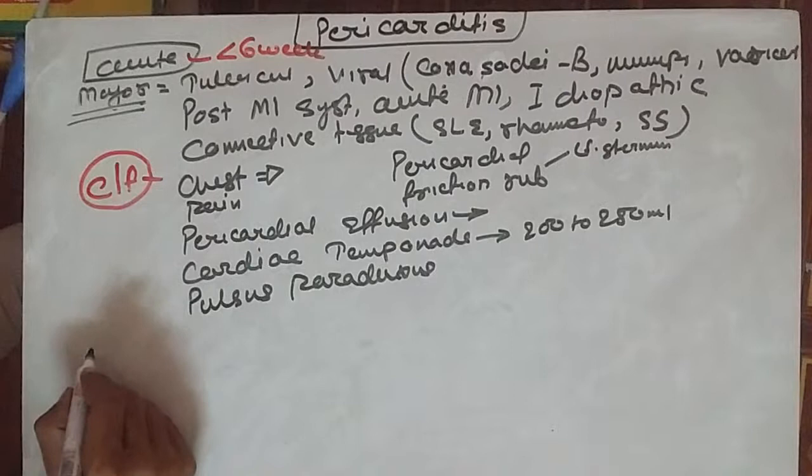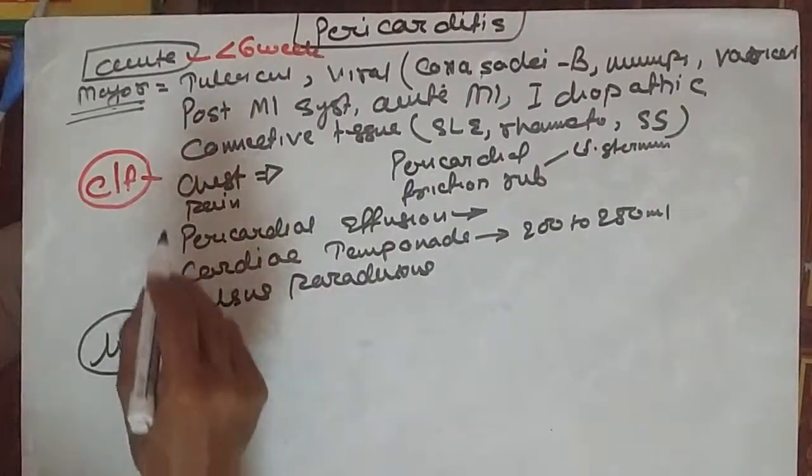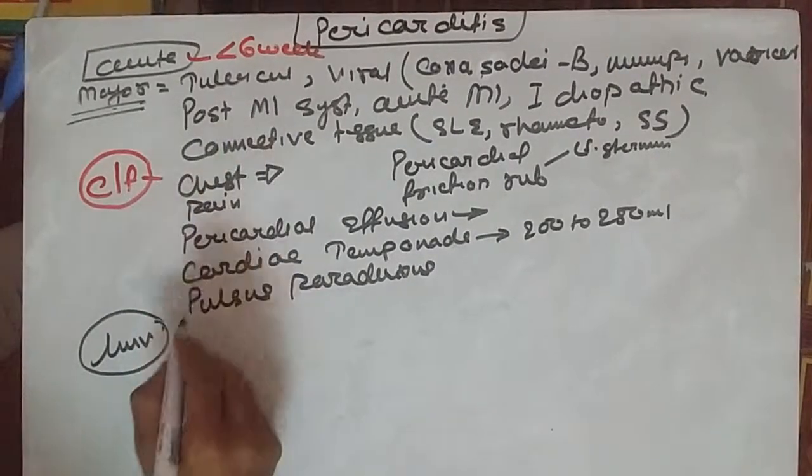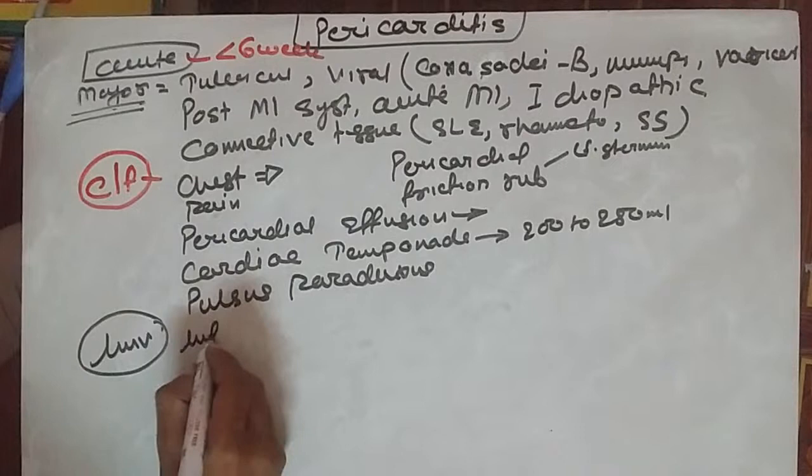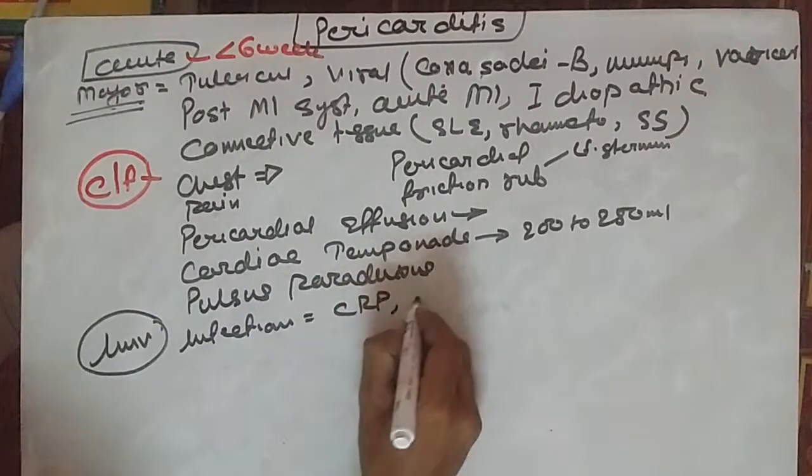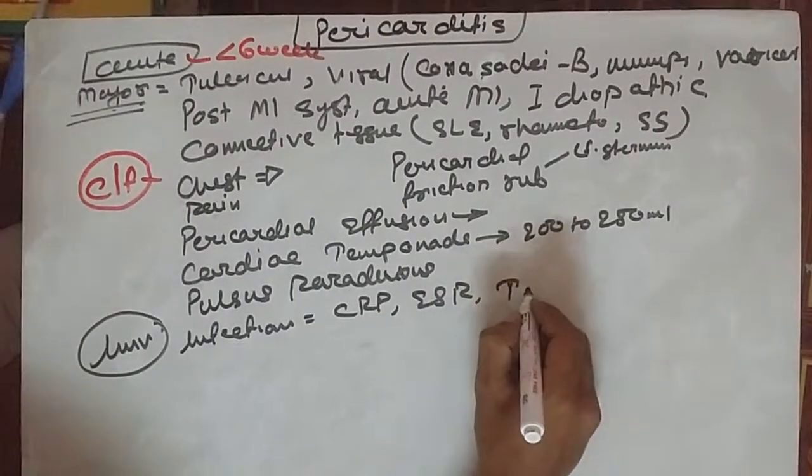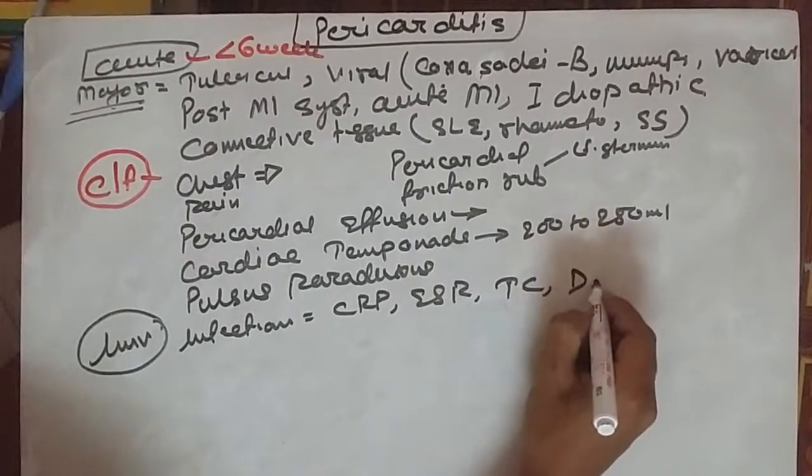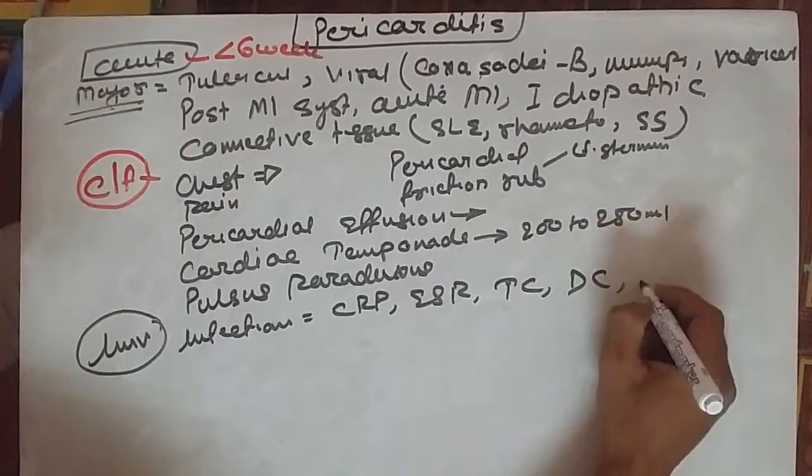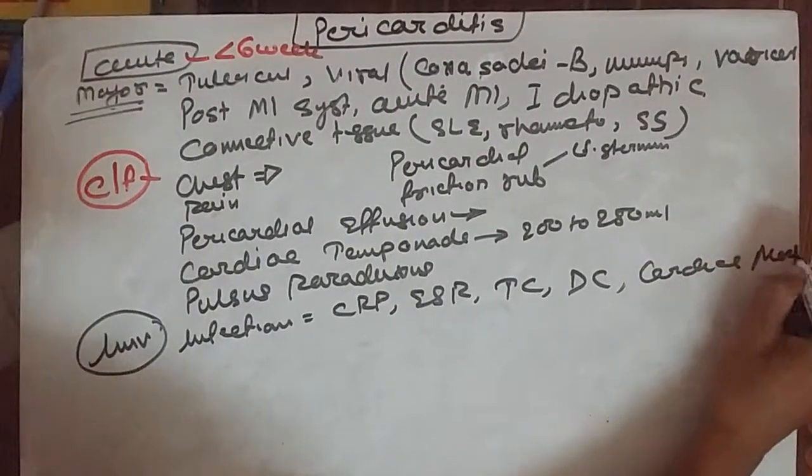What investigations will you send for pericarditis? Since there are lots of causes, to rule out infectious causes we'll check C-reactive protein, erythrocyte sedimentation rate, total leukocyte count, total count, differential count, and leukocytosis with neutrophilia should be increased. To rule out angina and MI, we'll check cardiac markers.